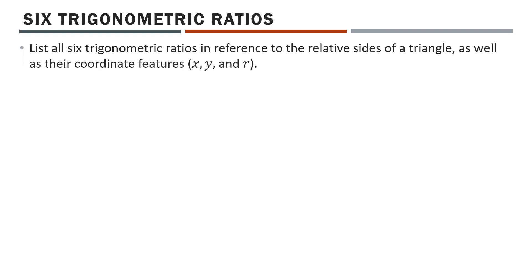List all six trig ratios in reference to the relative sides of the triangle as well as their coordinate features — x, y, and r — where r is the radius, or in other words, the diagonal hypotenuse length. Let's start with sine. Sine of theta is opposite over hypotenuse. On a triangle in terms of coordinate features, your opposite side is your y and your hypotenuse is your r.